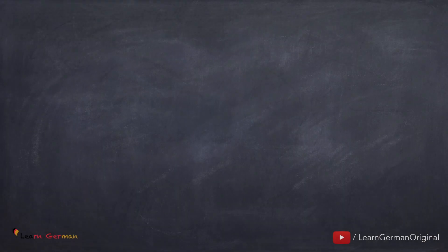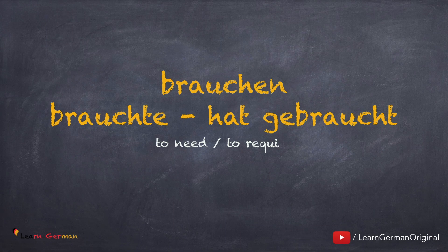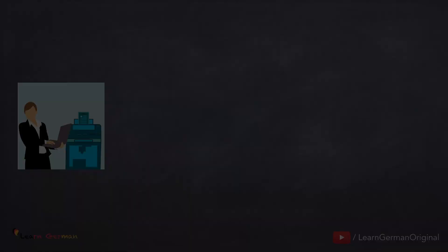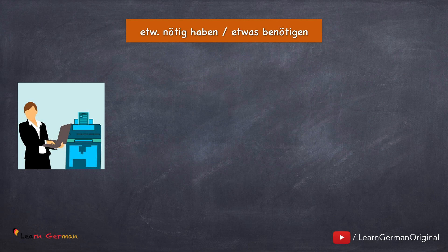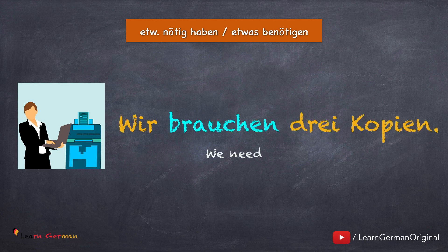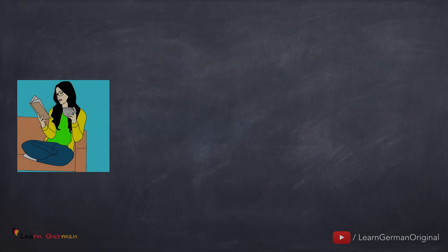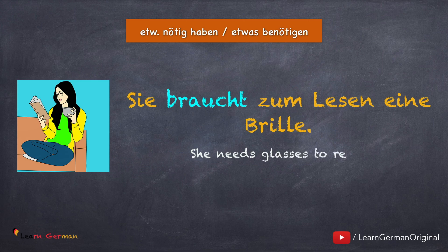Wir schauen uns jetzt das erste Verb an. Here's the first verb: Brauchen, brauchte, hat gebraucht. Brauchen hat viele Bedeutungen. Die erste ist etwas nötig haben oder etwas benötigen. Hier sind zwei Beispiele: Wir brauchen drei Kopien — Wir benötigen drei Kopien. Sie braucht zum Lesen eine Brille — Es ist nötig, dass sie zum Lesen eine Brille hat.